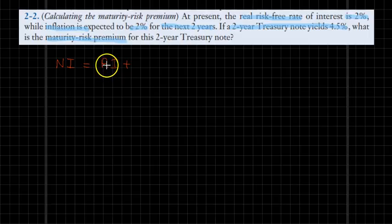...plus the inflation risk premium, which I call IP, plus the default risk premium, plus the maturity premium, and the liquidity premium. So you have a long sum here.